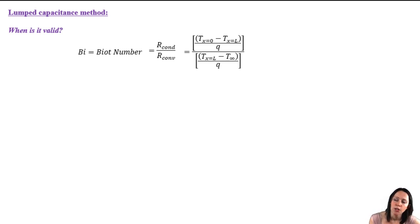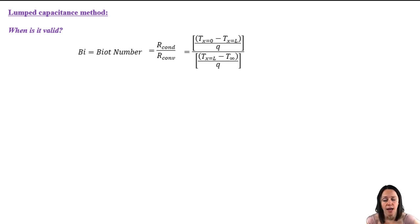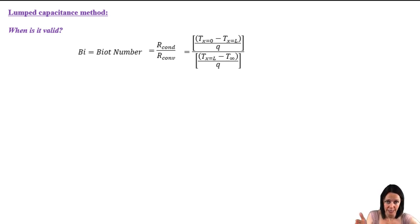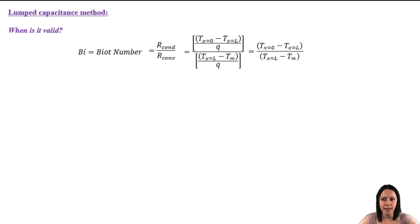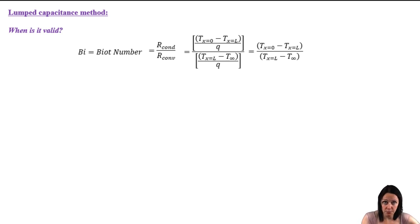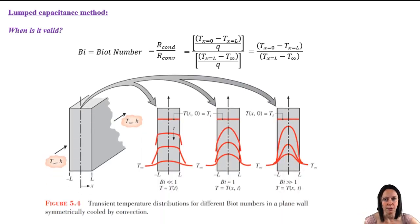On the top, note the temperatures we've chosen for the conductive resistances. This is for a plane wall with convection at position x equals L. Also note that at a given instant, the heat transfer rate is constant, so that's going to divide out. We can think of the ratio of resistances of heat transfer via conduction to convection as the ratio of these two temperature gradients. The bigger the temperature gradient, the bigger the resistance. Let's look at figure 5.4 from your book to see what we mean by this.